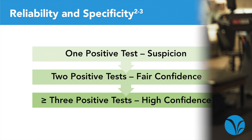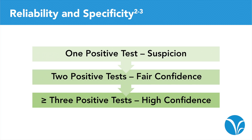One positive test raises suspicion that the SI joint is the cause of pain. Two positive tests provide fair confidence, while three positive tests provide high confidence that the SI joint is the cause of pain. We use a diagnostic injection to confirm the source of pain, which may also provide short-term relief. Please visit alleviospine.com to learn more about the diagnosis of SI joint pain and treatment options.